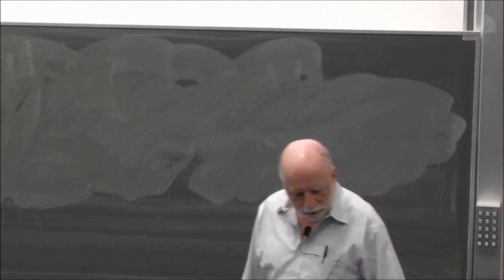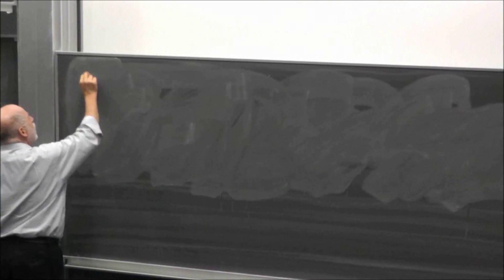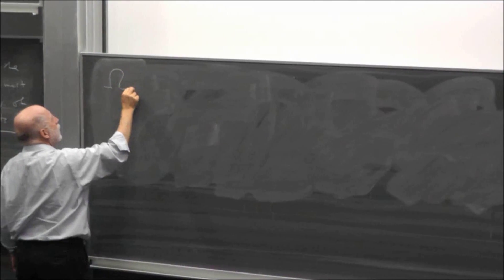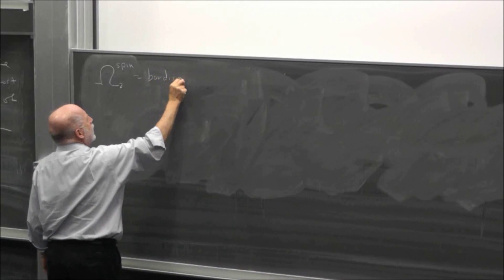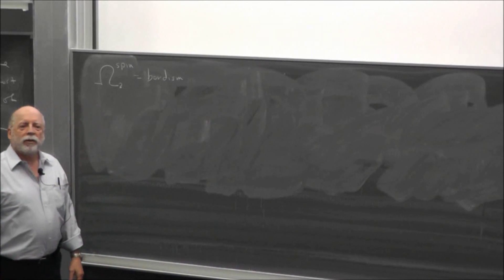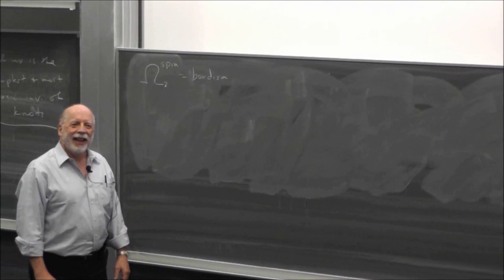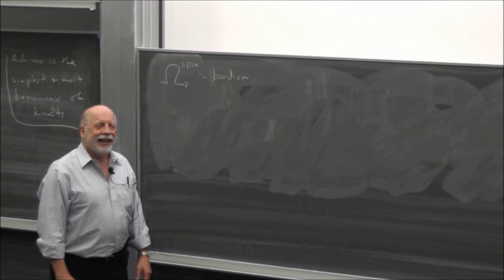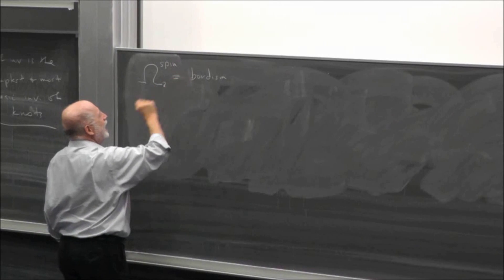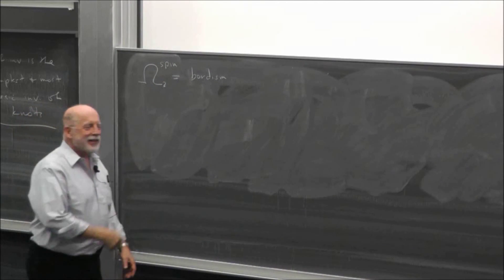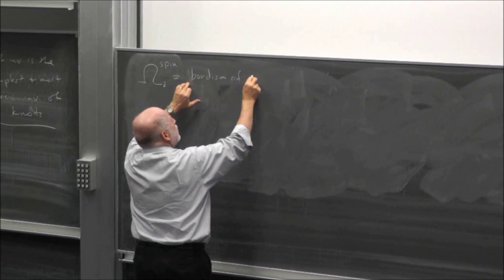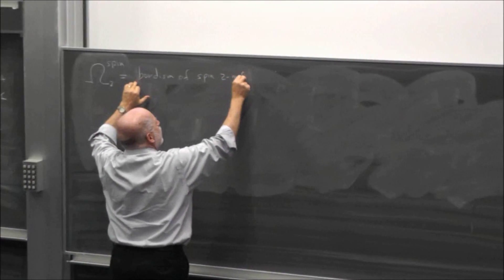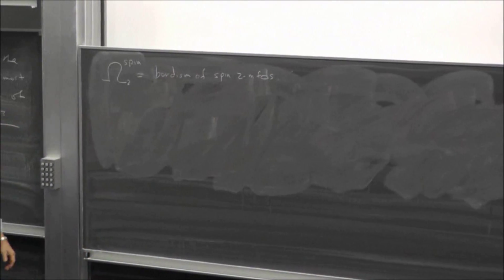That's the one-dimensional case. Before getting to dimension 3, I want to talk about dimension 2 where the Arf invariant turns up in spin bordism. This bordism group Ω₂^spin equals Z mod 2 — it's the bordism classes of spin 2-manifolds. So let me tell you what spin means.